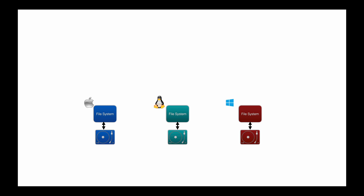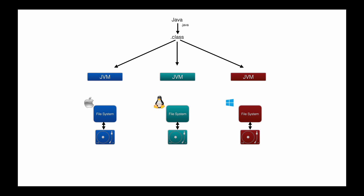The file system is the software that the operating system uses to read and write data from the hard disk. When a Java program interacts with the hard disk: we write a .java file, compile it into a .class file, and run it on the JVM. The JVM is system dependent, however Java itself is independent of the operating system. The JVM interacts with the file system as per the instructions written in the Java program, and the file system interacts with the hard disk to read and write data. So a Java program doesn't directly interact with the hard disk — it goes through the file system, which is part of the operating system.